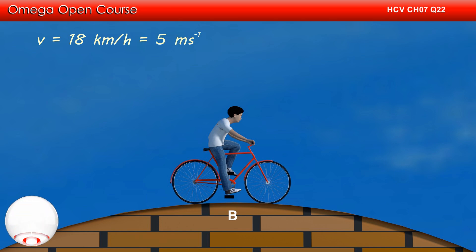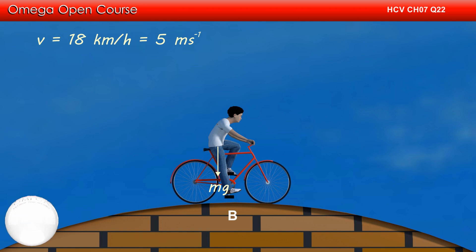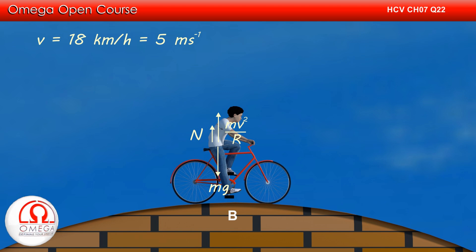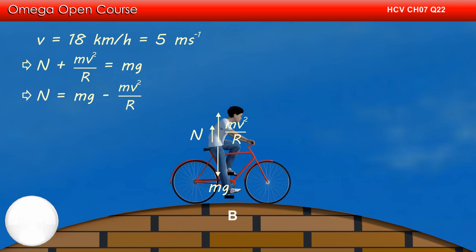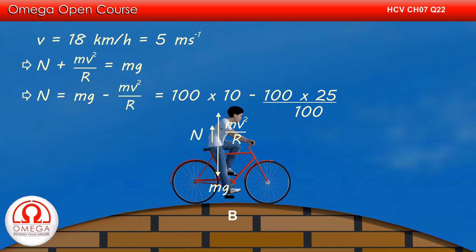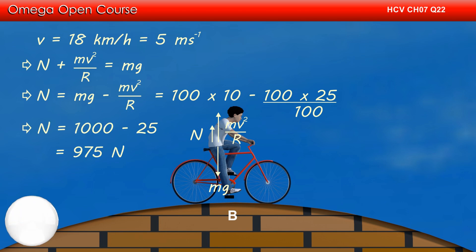Let us draw the free body diagram of the cycle-rider system when the cycle is at point B. The gravitational force Mg acts on the system in the vertically downward direction. If we attach our frame to the cycle, a centrifugal force of magnitude Mv²/R acts in the vertically upward direction, and the normal contact force from the road also acts in the vertically upward direction. Since in our frame the cycle is not accelerating, net force must be 0, so N plus Mv²/R equals Mg, which implies N equals Mg minus Mv²/R. Putting the values: N = 100×10 − 100×25/100 = 1000 − 25 = 975 Newtons.